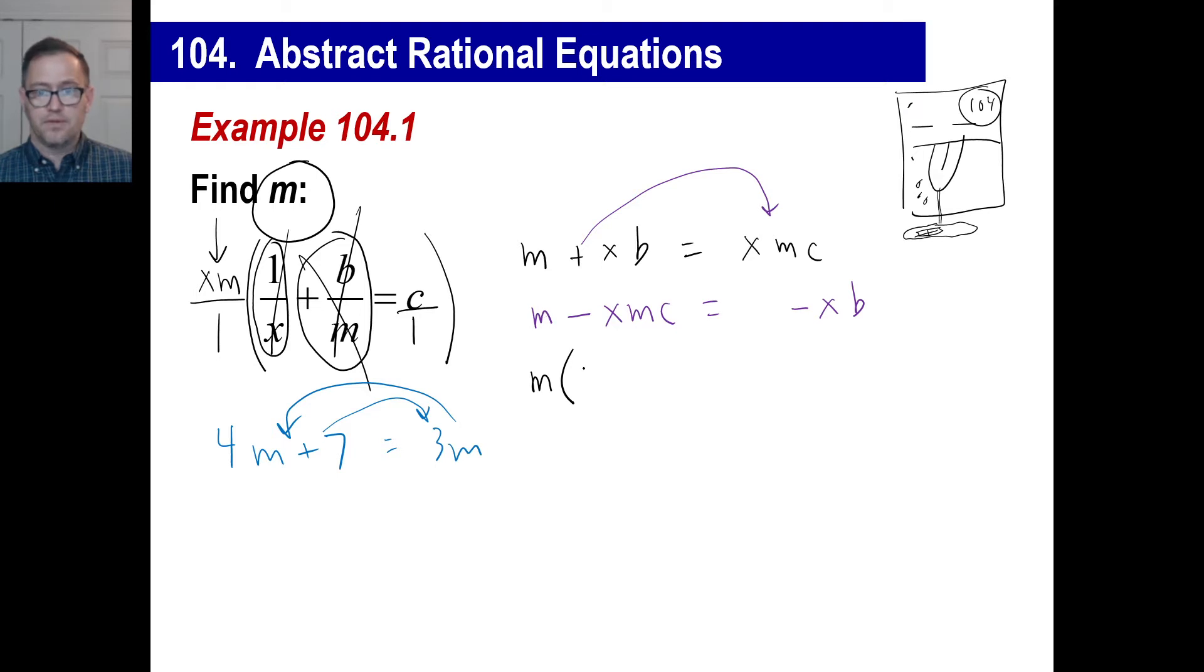Well, m divided by m is just, don't say zero. It's one, right? And you have a negative. Then what's xmc with the m factored out? That's just xc, right?